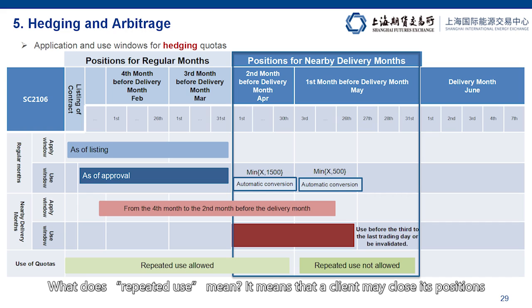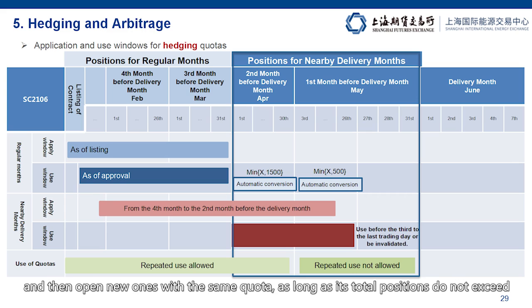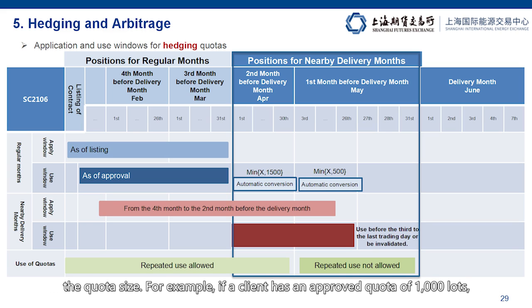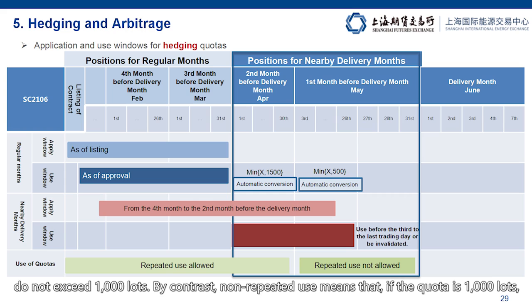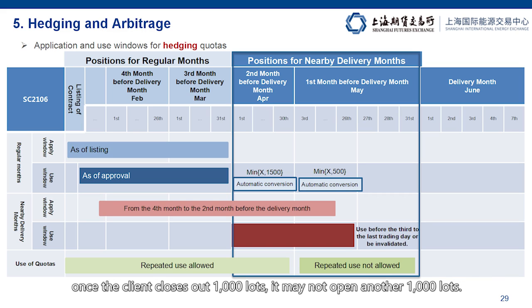What does repeated use mean? It means that a client may close its positions and then open new ones with the same quota as long as its total positions do not exceed the quota size. For example, if a client has an approved quota of 1,000 lots, it may close 1,000 lots and then open 1,000 lots as long as the total hedging positions do not exceed 1,000 lots. By contrast, non-repeated use means that if a quota is 1,000 lots, once the client closes out 1,000 lots, it may not open another 1,000 lots.